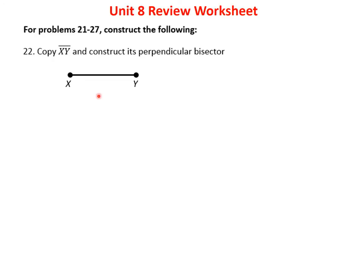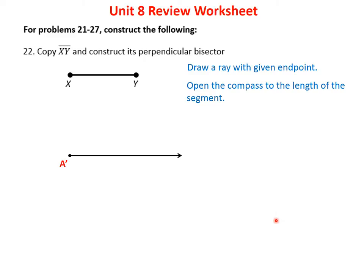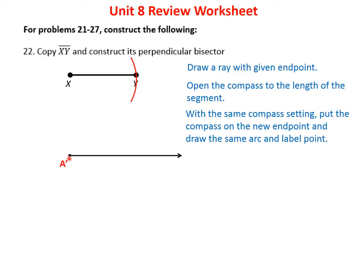In problem 22, we copy segment XY and construct its perpendicular bisector. First, draw a ray with an endpoint labeled A. Open the compass to the length from X to Y, then place it on A and mark point B prime on the ray — now A to B prime equals X to Y. To draw the perpendicular bisector, place the compass on B with an arc bigger than half the segment, draw a large arc above and below.